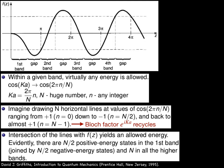Within a given band, virtually any energy is allowed. Cos(Ka) becomes cos(2πn/N), where N is the huge number and n is any integer.